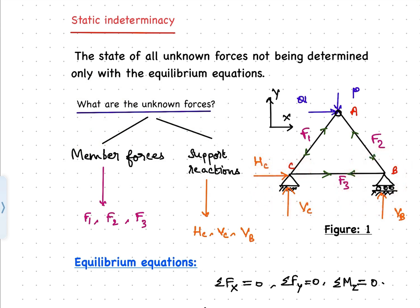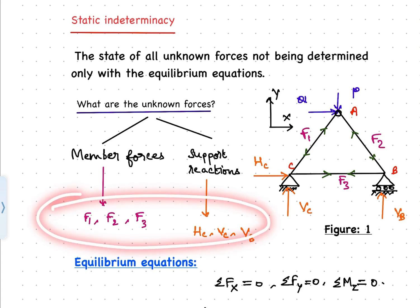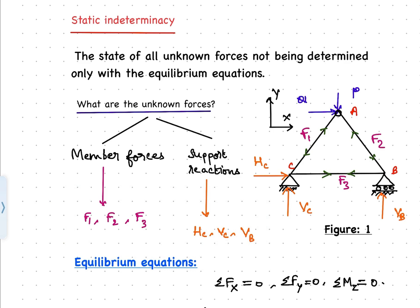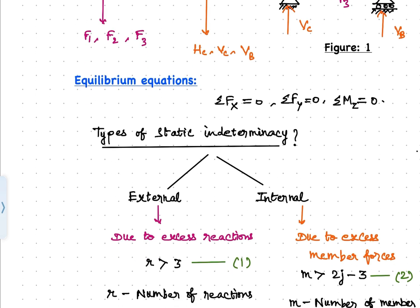At joint C, two reactions — HC and VC — develop due to the load applied at joint A. At joint B, only a vertical reaction develops. The member forces are F1, F2, and F3 as we see. If you want to solve for all these six unknowns, we have at our disposal the equilibrium equations.